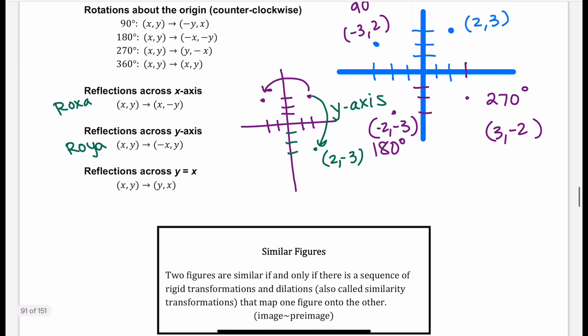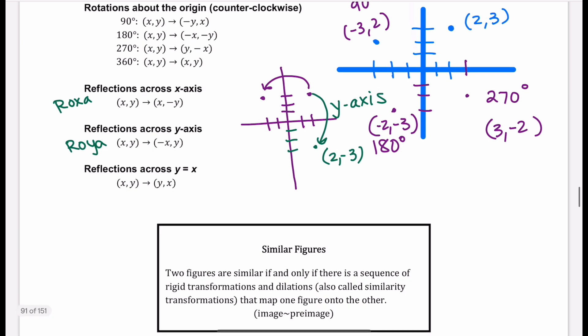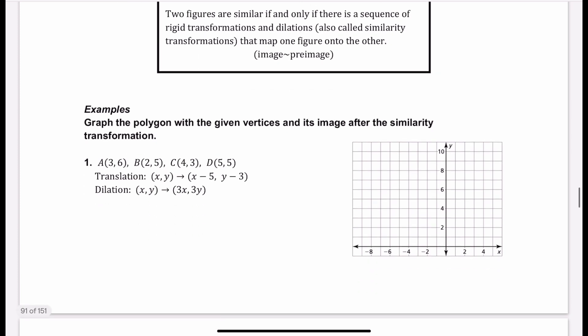A reflection across the line y equals x is where we just swap our x and our y. So if I had the point (2, 3) and flipped it over the line y equals x, that would give me the point (3, 2). Now, similar figures are two figures where there's a sequence of rigid transformations and dilations that map one figure to another — it could be bigger, smaller, rotated, or moved around.